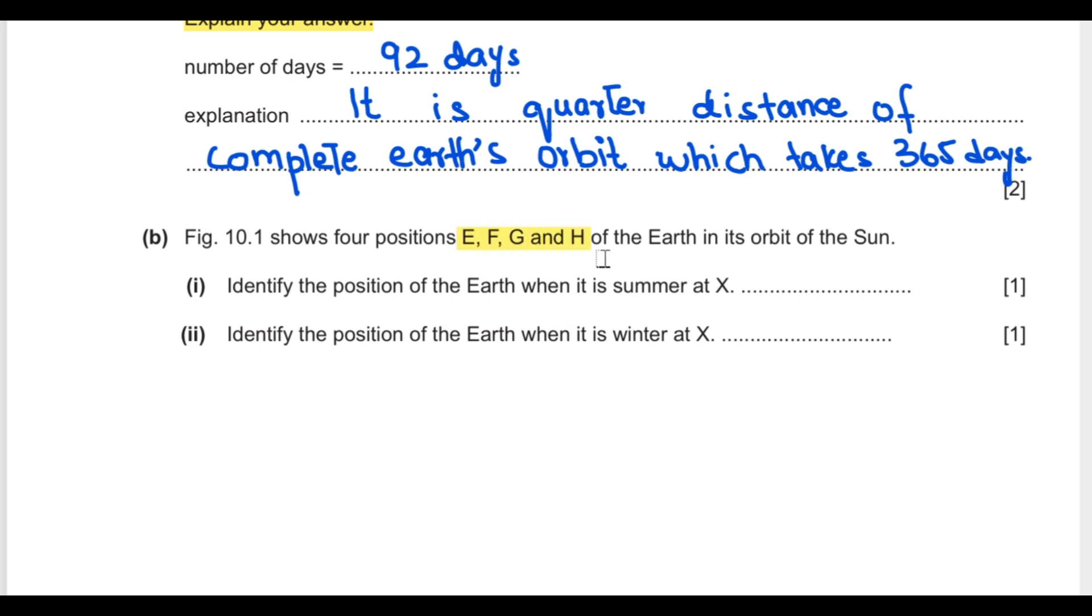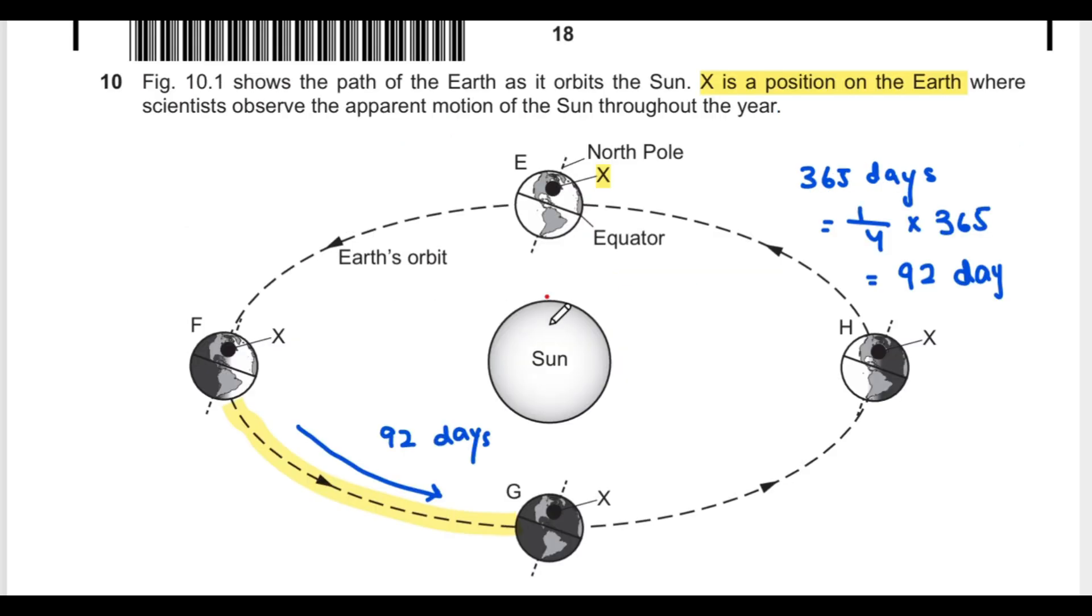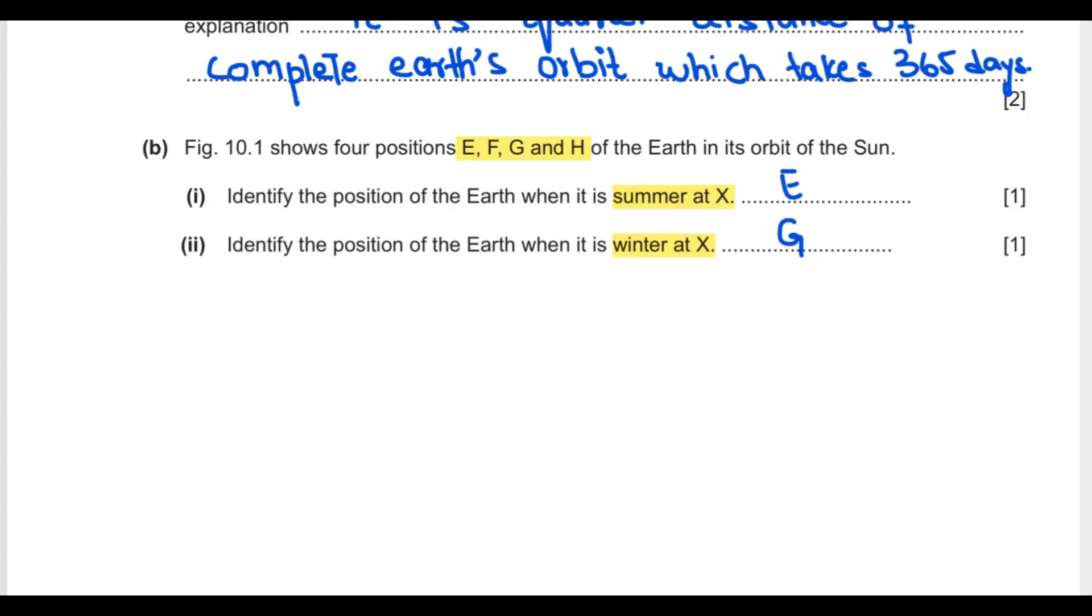Part B says identify the position of Earth when it's summer at X and when it is winter at X. At point E, Earth is tilted in a way that the rays of sun are reaching directly at X, so it is summer at X. At position G, the sun rays cannot reach this point directly, so there is winter at G.